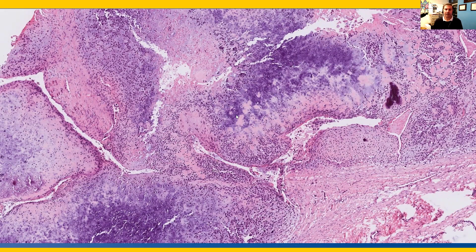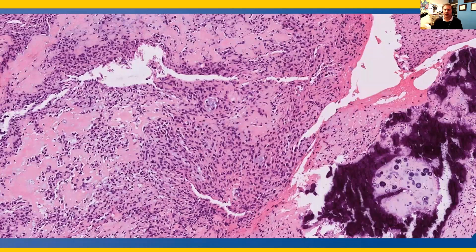The cells are haphazardly growing and have various areas of osteoid production. At higher power, we have areas of cartilage — these little nodules with the purple matrix mineralization pattern of osteoid. Cells are haphazardly growing with this pink osteoid matrix, and this is a chondroblastic osteosarcoma.